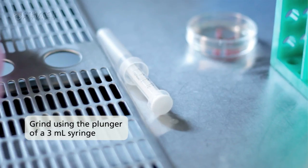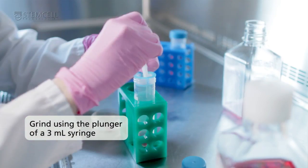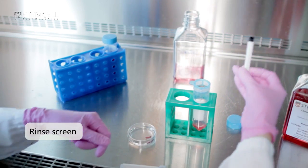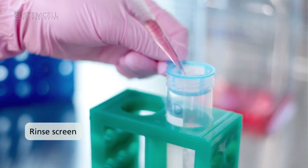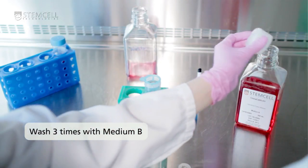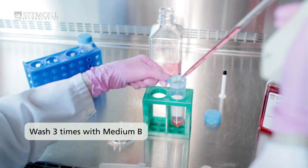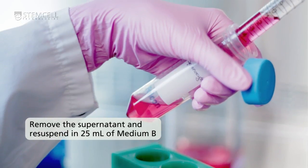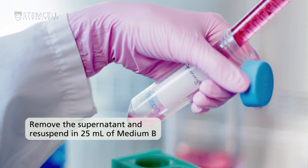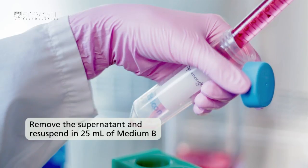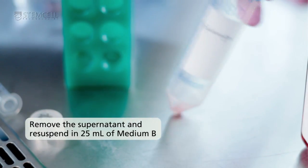Grind the spleen using the plunger of a 3 mil syringe. Rinse the screen to flush all the splenocytes through the mesh and into the conical tube. Wash splenocytes three times in medium B. Remove the supernatant by pipette instead of pouring it off as the cell pellet is fairly loose. Re-suspend in 25 mils of medium B.